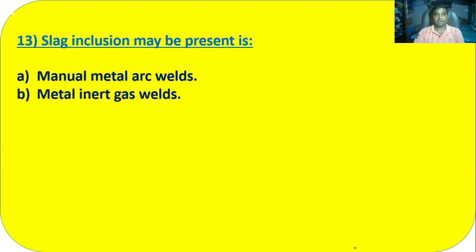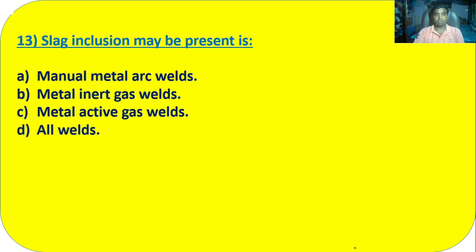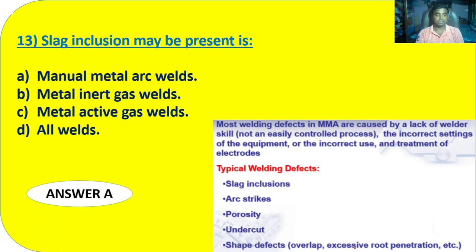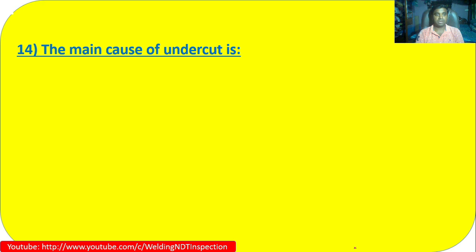Question 13: Slag inclusion may be present in: A) manual metal arc welds; B) MIG welds; C) MAG welds; D) all welds. Most welding defects in MMA are caused by lack of welder skill, incorrect equipment settings, or incorrect use. Defects include slag inclusion, arc strike, porosity, undercut, and shape defects. Since manual welding has more chance of slag inclusion, Option A — manual metal arc welds — is the correct answer.